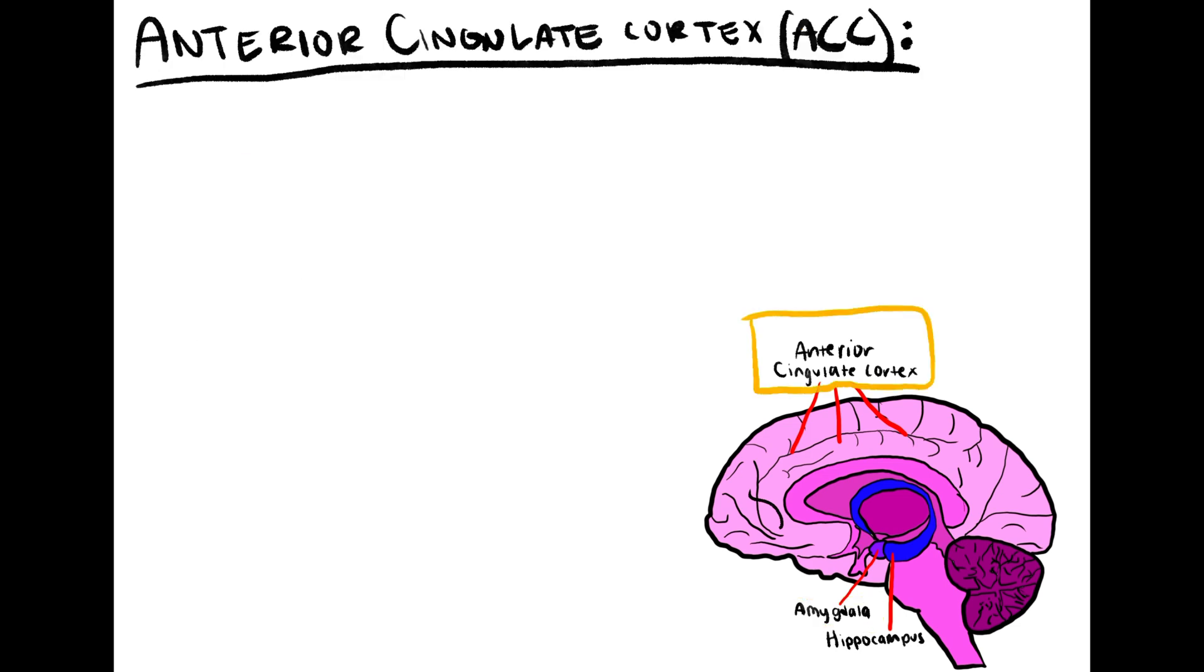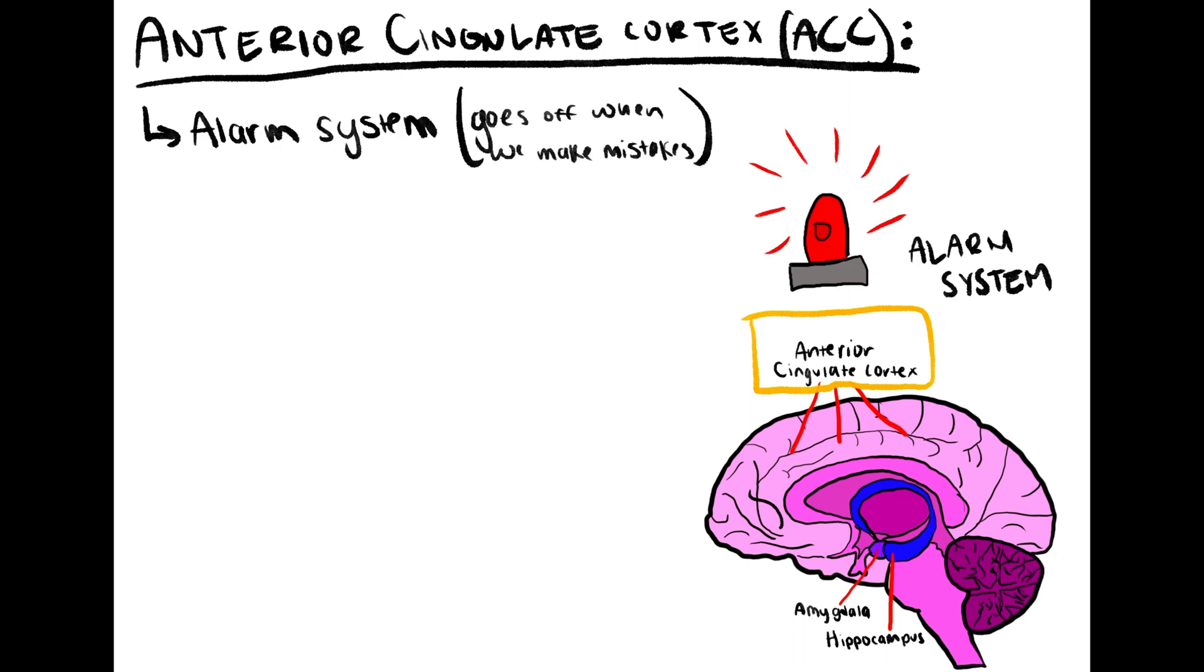The anterior cingulate cortex serves as the alarm system in the social brain. When we make mistakes, the ACC goes off and lets us know.